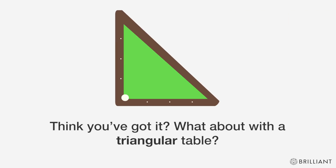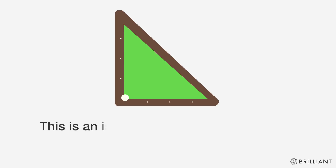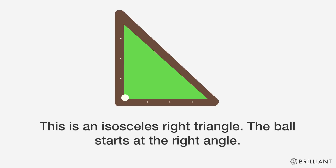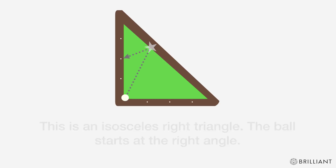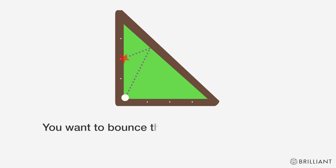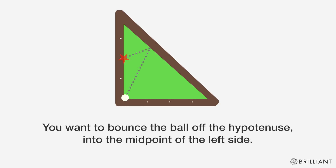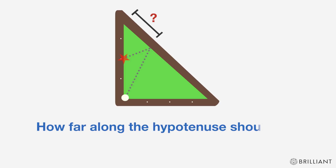Think you've got it? What about with a triangular table? This is an isosceles right triangle. The ball starts at the right angle. You want to bounce the ball off the hypotenuse into the midpoint of the left side. How far along the hypotenuse should you aim?